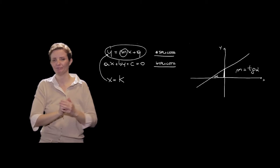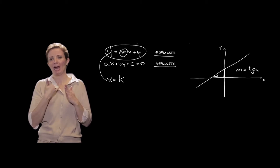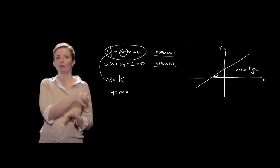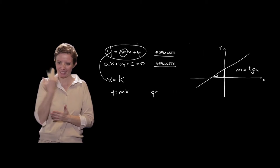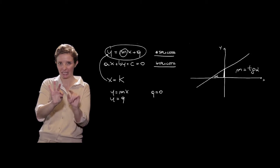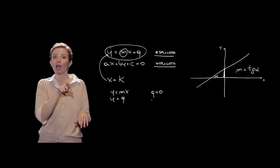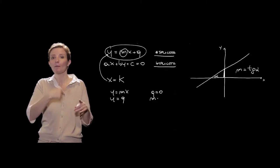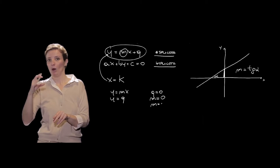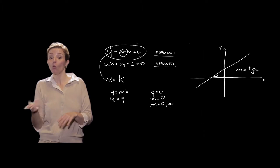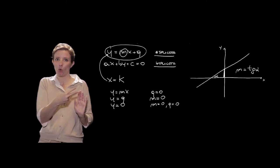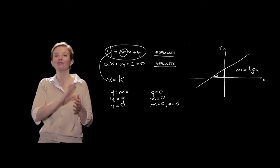Casi particolari: y = mx è la retta passante per l'origine, ottenuta quando q = 0. y = q è una retta parallela all'asse delle x, ottenuta quando m = 0. Nel caso in cui sia m che q siano entrambi uguali a 0, si ottiene y = 0, che corrisponde all'asse delle x.